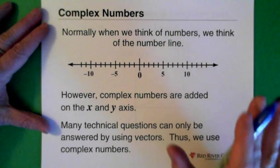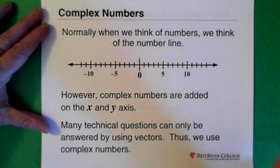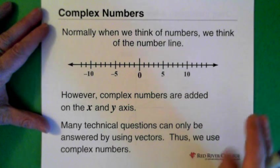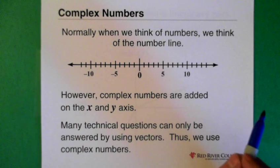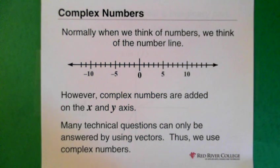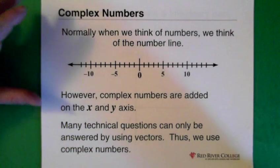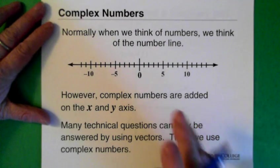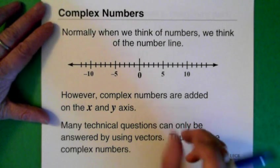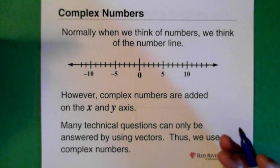However, when we're dealing with complex numbers, we need to be working on the x and y axis. And there's lots of reasons why you have to do it. And one of them is AC circuits, so alternating current circuits, where when you're dealing with inductors and capacitors, you need to be able to work on the x and y axis.